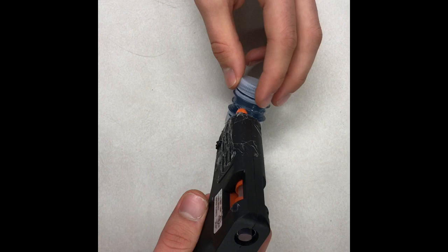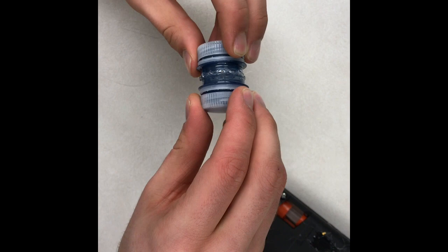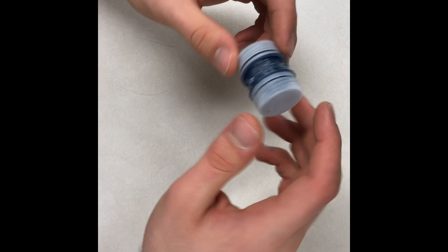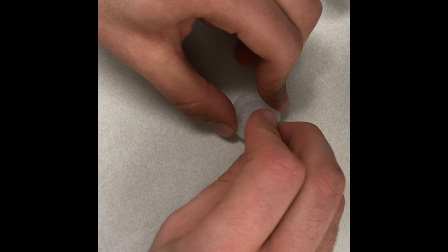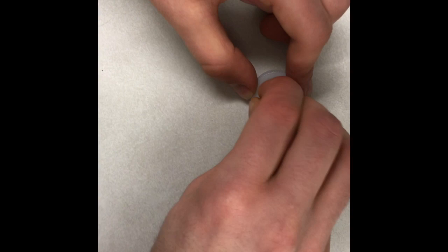So now the final step is to very, very safely take a thumbtack or another sharp object and poke some holes into one of the water bottle caps. But don't poke it into both of the water bottle caps.